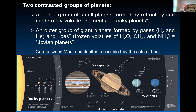We also have two asteroid belts: the main asteroid belt and the Kuiper belt. I will talk about those a bit later.